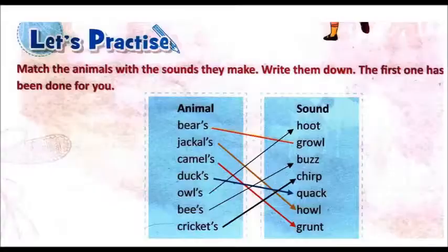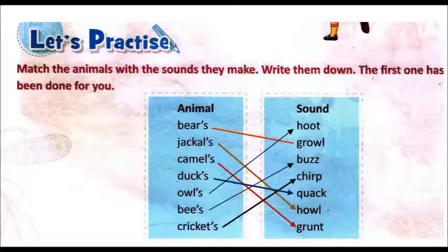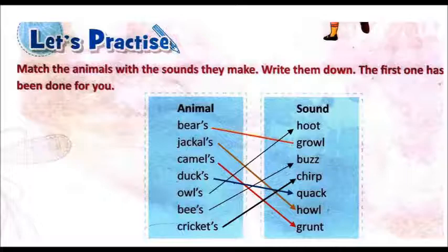In the same way, another exercise is given to you. In this, animals and their sounds are given. The first one is already done. Bears — growl, then jackals — howl, then camels — grunt, ducks — quack, owls — hoot, bees — buzz, crickets — chill.